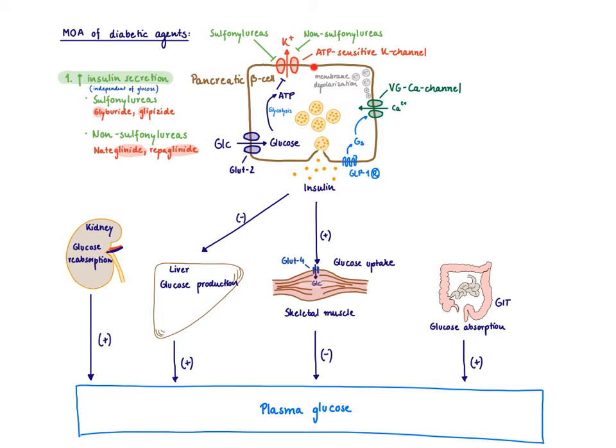If you shut down the potassium channel, that leads to positive charge accumulation in the cells, leading to membrane depolarization. Calcium gets in via the voltage-gated calcium channel, and insulin is released. This is a mechanism of action independent of glucose levels. It just closes the potassium channel and leads to release of insulin.